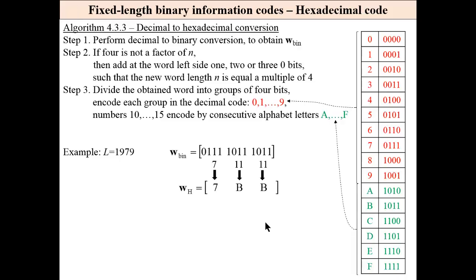And finally, hexadecimal code. To obtain hexadecimal code from decimal, first we have to perform decimal to binary conversion. If four is not a factor of n, then we have to add at the word left side one, two, or three zero bits, such that the new word length n is equal to a multiple of four. Then we divide the obtained word into groups of four bits and encode each group in the decimal code.